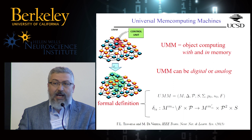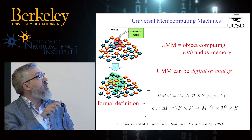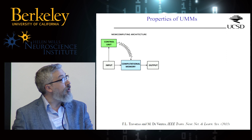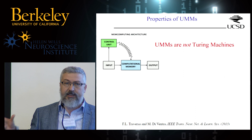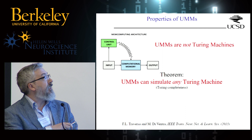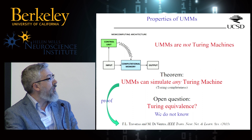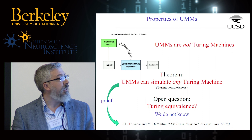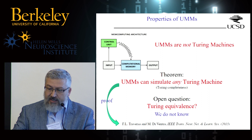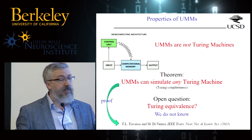We need to prove theorems to establish the power of these machines compared to Turing machines. These are not Turing machines — they operate on the collective state of the system — but we can prove that they can simulate any Turing machine, so they are Turing complete. The open question, and I don't have an answer, is whether they are equivalent to Turing machines — whether all problems solvable by Turing machines can be solved by UMMs or vice versa. We cannot prove this because it is not easy to formalize information overhead using Turing machines.